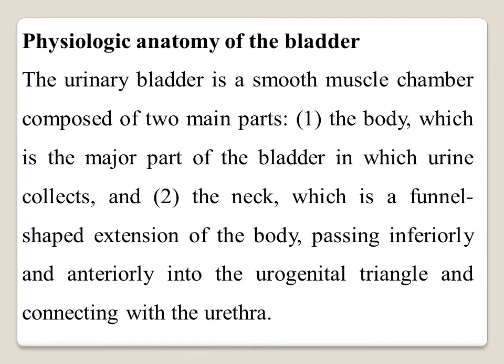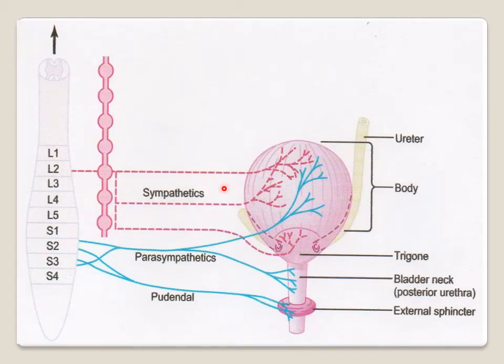The physiological anatomy of the bladder: the urinary bladder is a smooth muscle chamber composed of two main parts — the body, which is the major part where urine collects, and the neck, which is the funnel-shaped extension passing inferiorly and anteriorly into the urogenital triangle and connecting with the urethra.